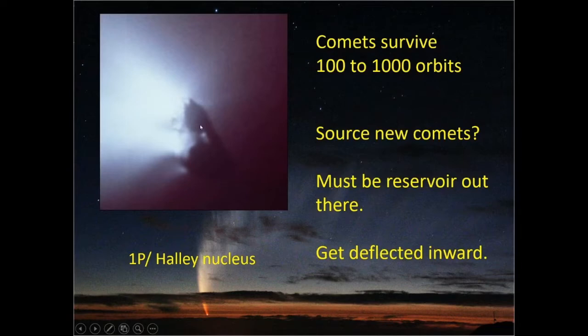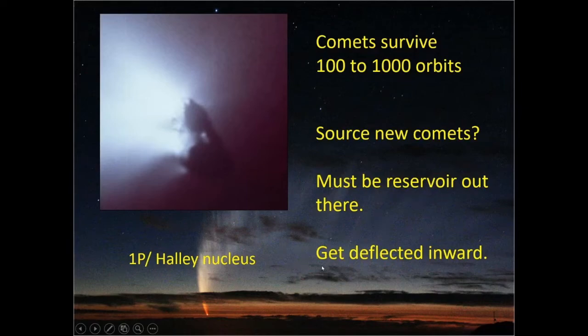Now when a comet goes near the sun it gets hot, it gives up all sorts of dust and gas and it loses mass. Comets survive depending on where they are in their size, something like 100 to 1,000 orbits. 1,000 times Halley's orbit is 80,000 years. That's a long time in terms of my life but it's just an eye blink compared to the history of the solar system. So eventually the comets we see right now are going to fade away, and where do the new comets come from? In the 1950s, two Dutch astronomers said there must be a reservoir out there and the comets get deflected inward.